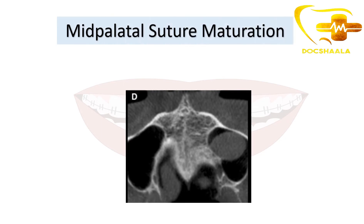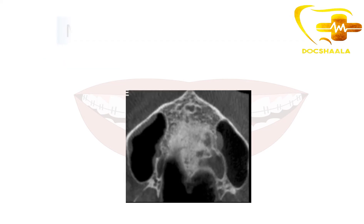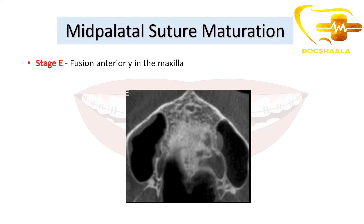Stage D: fusion is completed in the palatine bone with no evidence of a suture — only a faint trace remains and is not clearly visible. Stage E: fusion anteriorly in the maxilla, where there is no suture visible at all. These are the different radiographic stages of mid-palatal suture maturation.